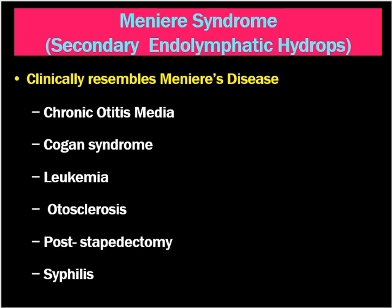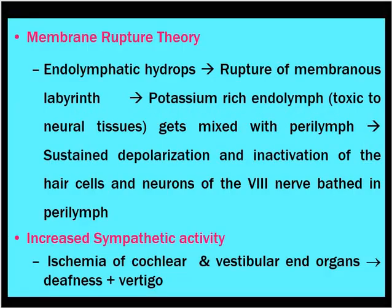Other known causes of Meniere's syndrome include Cogan's syndrome, leukemia, metastasis to the inner ear, otosclerosis with involvement of the inner ear or cochlea, post-stapedial surgery, and syphilis. All of these can lead to secondary endolymphatic hydrops.